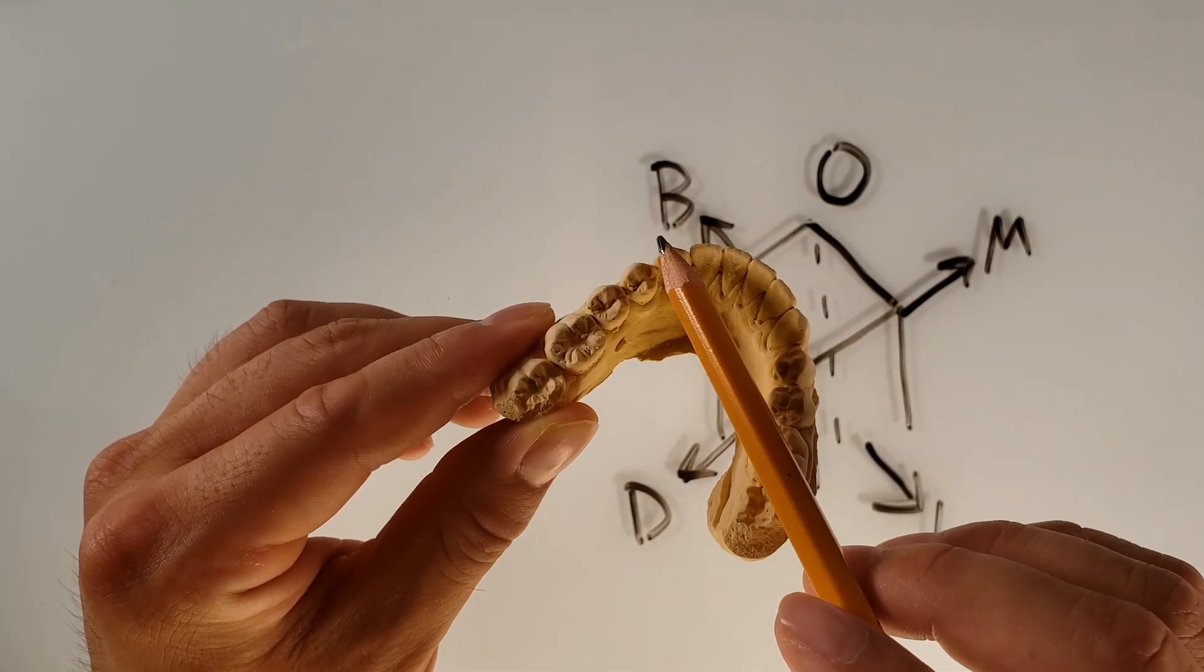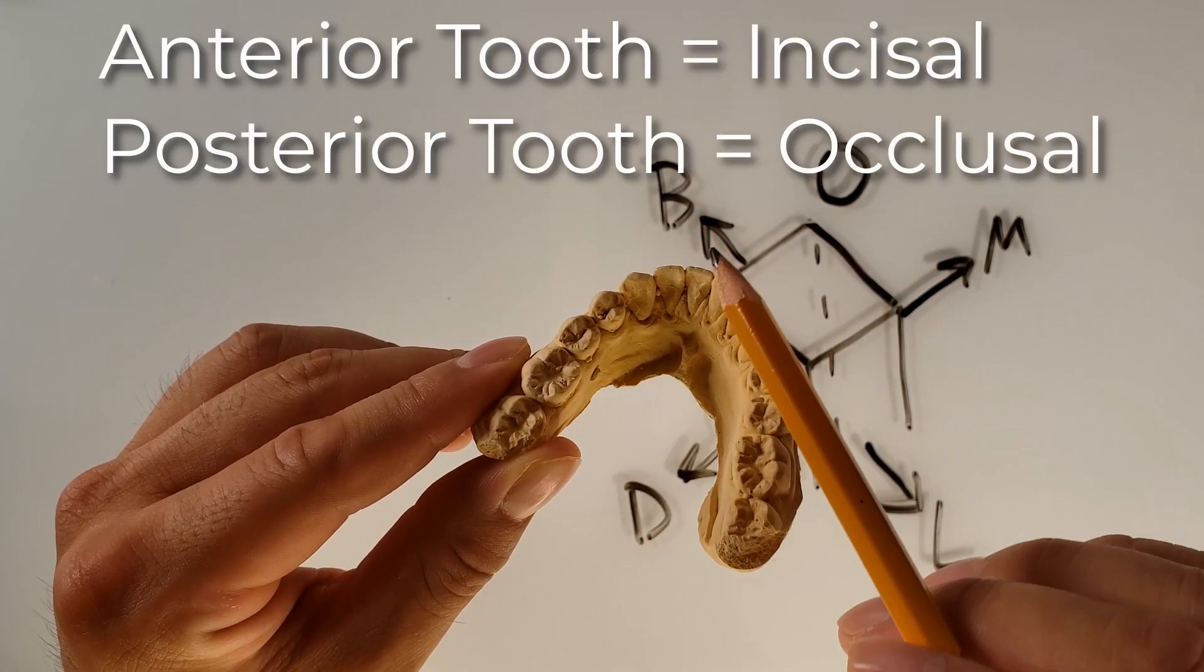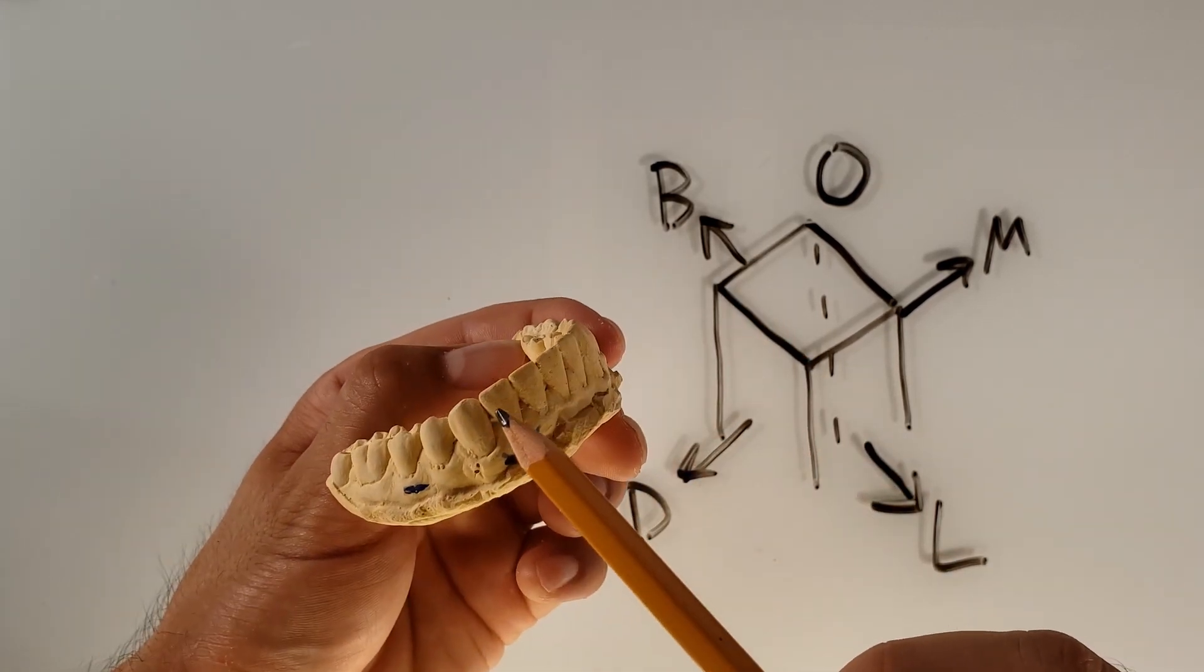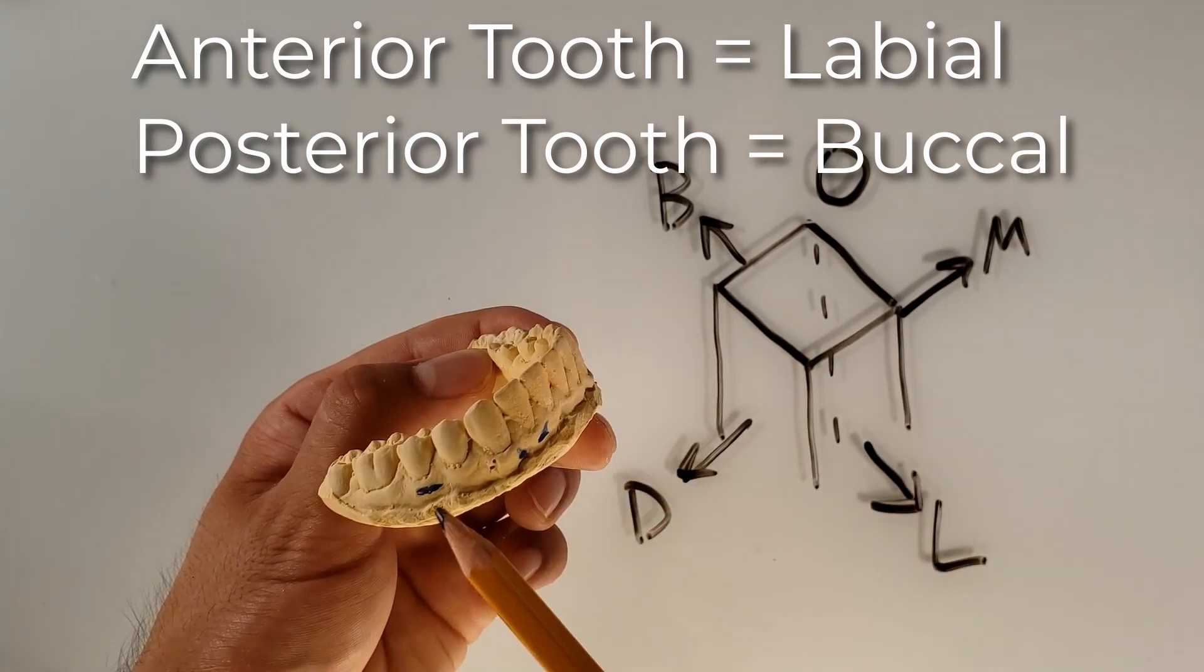Any anterior tooth includes canine to canine. So the only difference would be the occlusal would be the incisal, and the buccal of a posterior would be the labial for lips. So again, canine to canine.